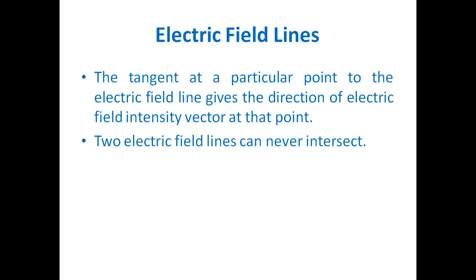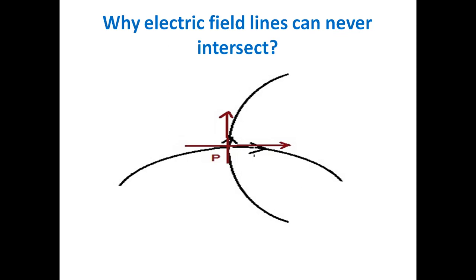Another most important property of electric field lines is that they never intersect each other. The question arises: why don't they intersect? The answer is simple. Let's assume two electric field lines are intersecting — this is one electric field line and this is another — and they intersect at point P. If we draw a tangent at point P, one tangent goes this way and another tangent goes this way, corresponding to the two electric field lines.